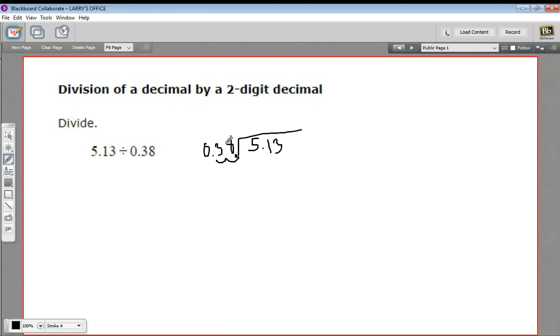If I do that to this number, I have to do it to this number as well. So I'll move that two spaces. And then I'm just going to rewrite this problem. This becomes a 38 out here and 513 here. So this problem is really 513 divided by 38.